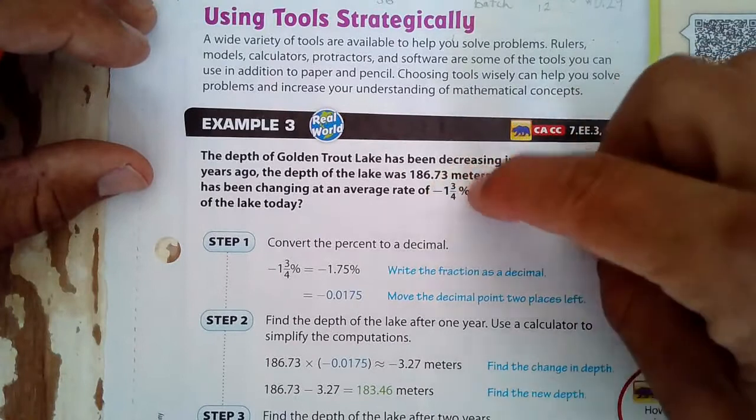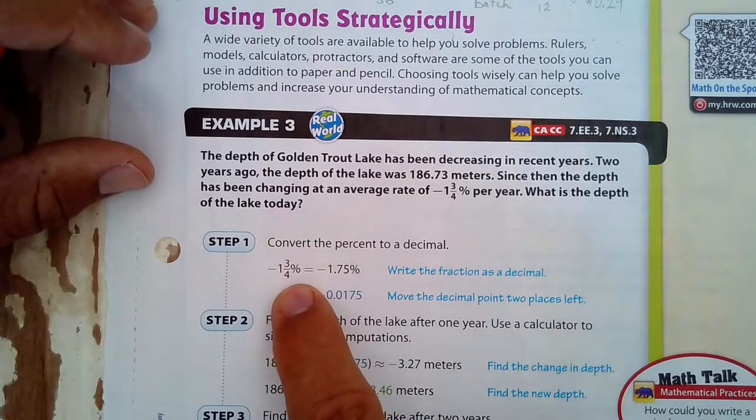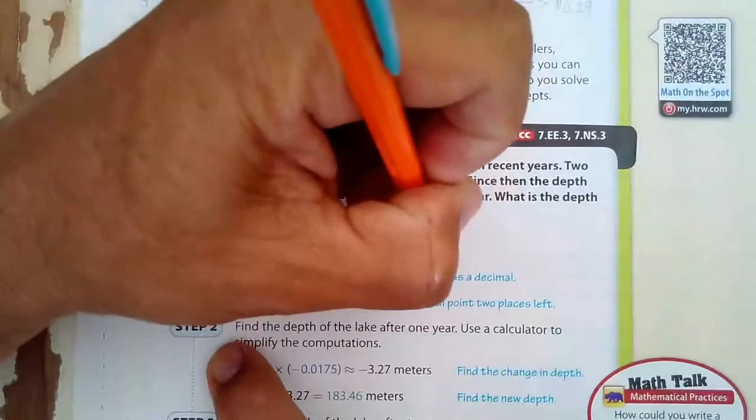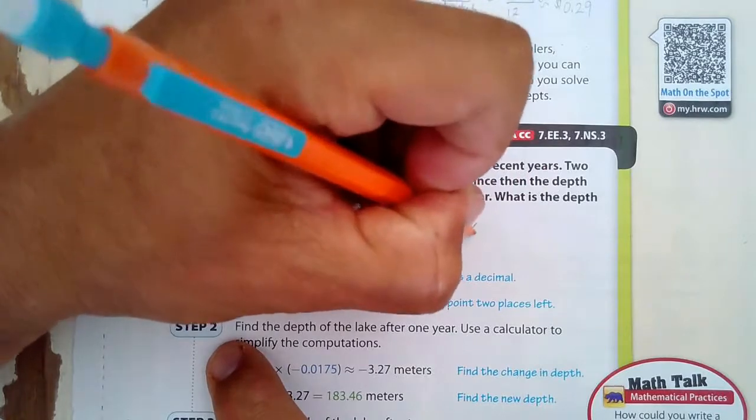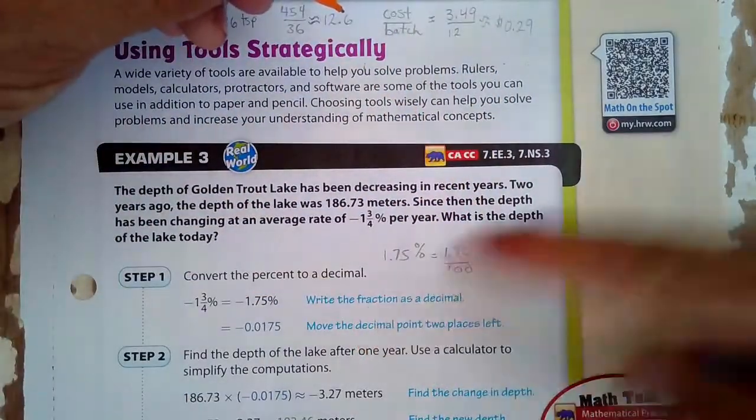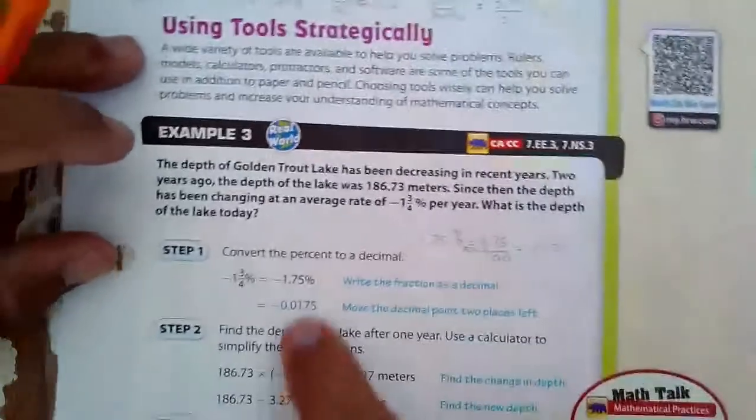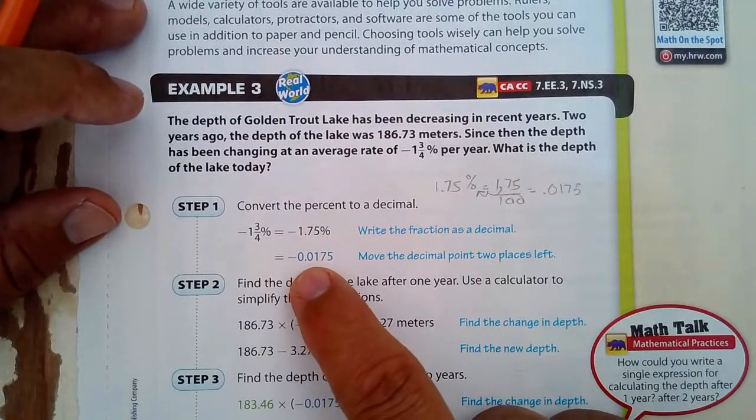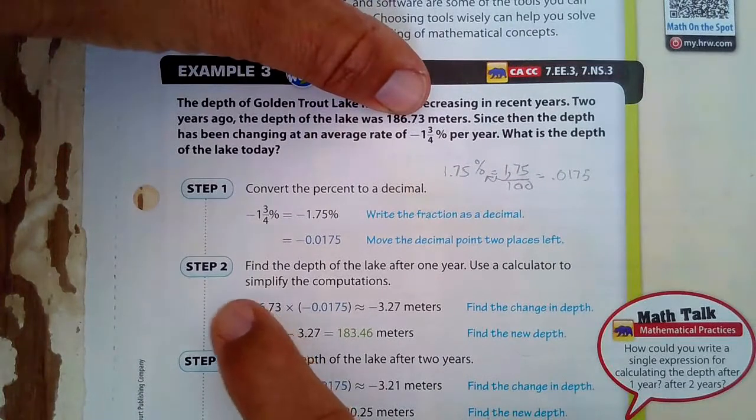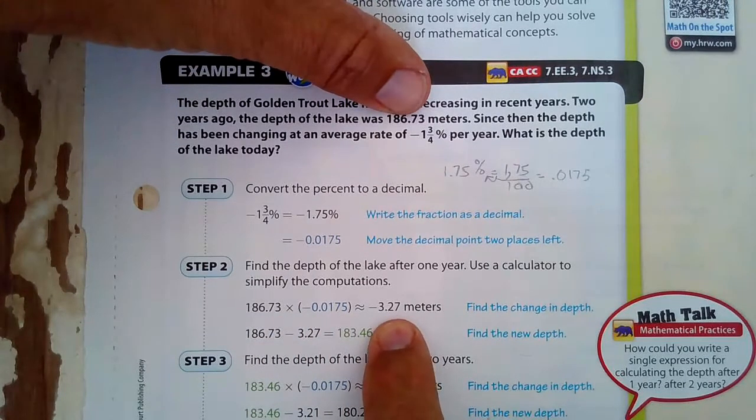We're going to turn this into a decimal. 1 and 3/4, there's the one. Three fourths is 75, three quarters, which is 75 cents. So that means it's negative 1.75 percent. Now to turn this decimal to a percent, remember, 1.75 percent means 1.75 out of 100. If you divide by 100, you're moving the decimal two times to the left. So that's 0.0175. Now we're going to take our original depth and multiply that by how much it's decreasing by. When we do that, we get negative 3.27 meters. So that's how much it went down by.